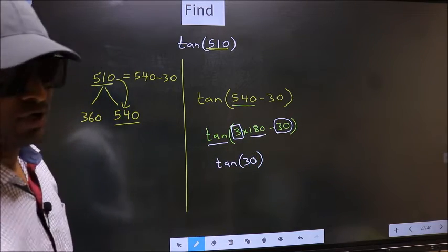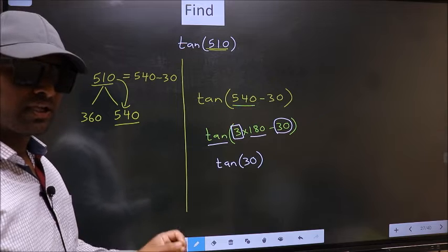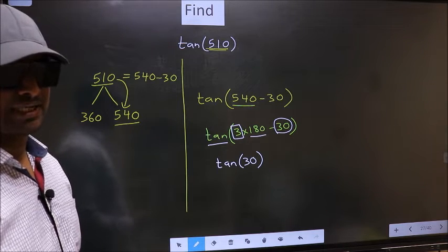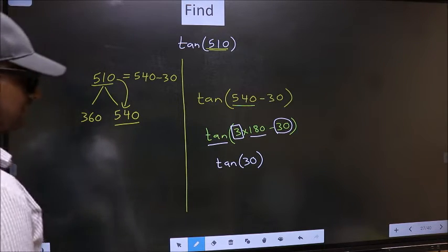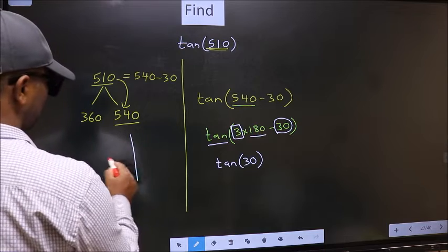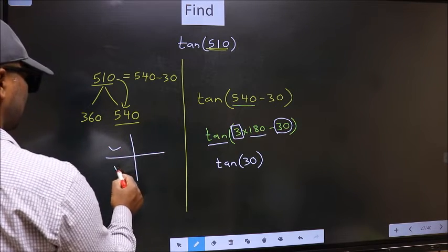And 3 is odd. And all the odd multiples of 180, they lie either in the second or in the third quadrant.